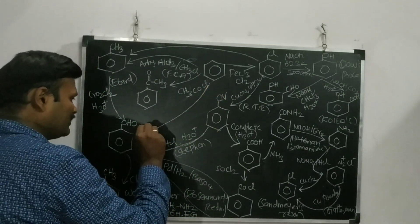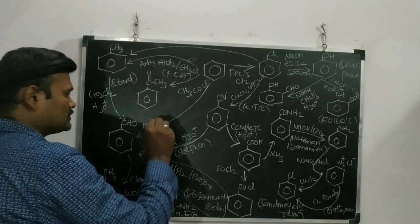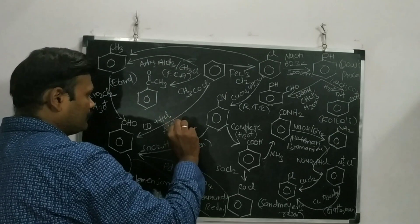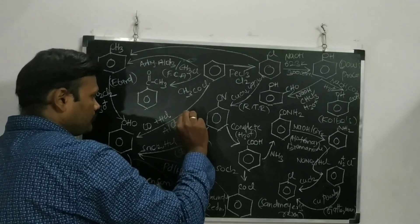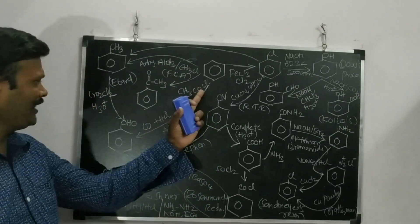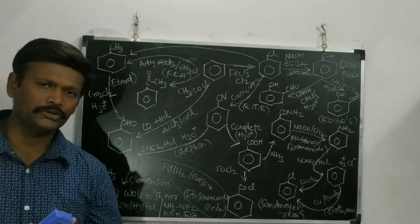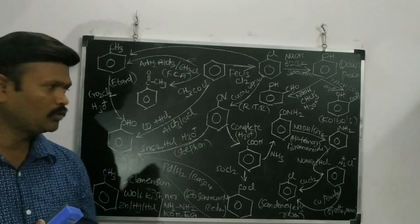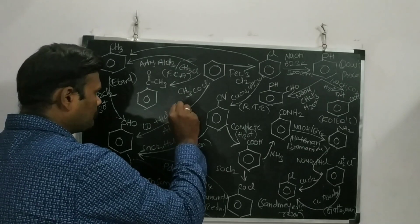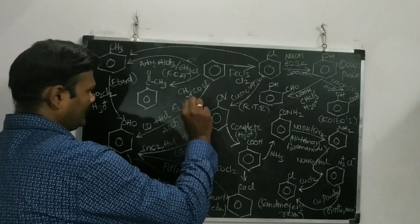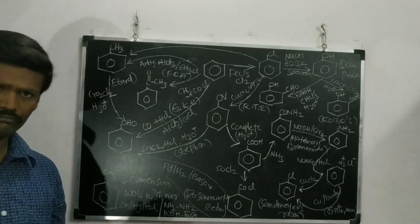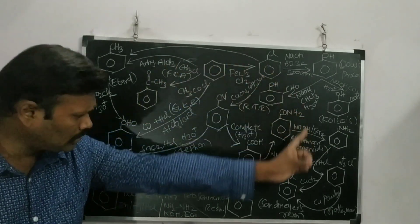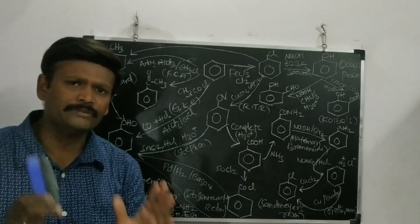To convert benzene directly to benzaldehyde, we use CO and HCl in the presence of AlCl3 and CuCl as catalysts. This formylation reaction is called the Gatterman-Koch reaction.